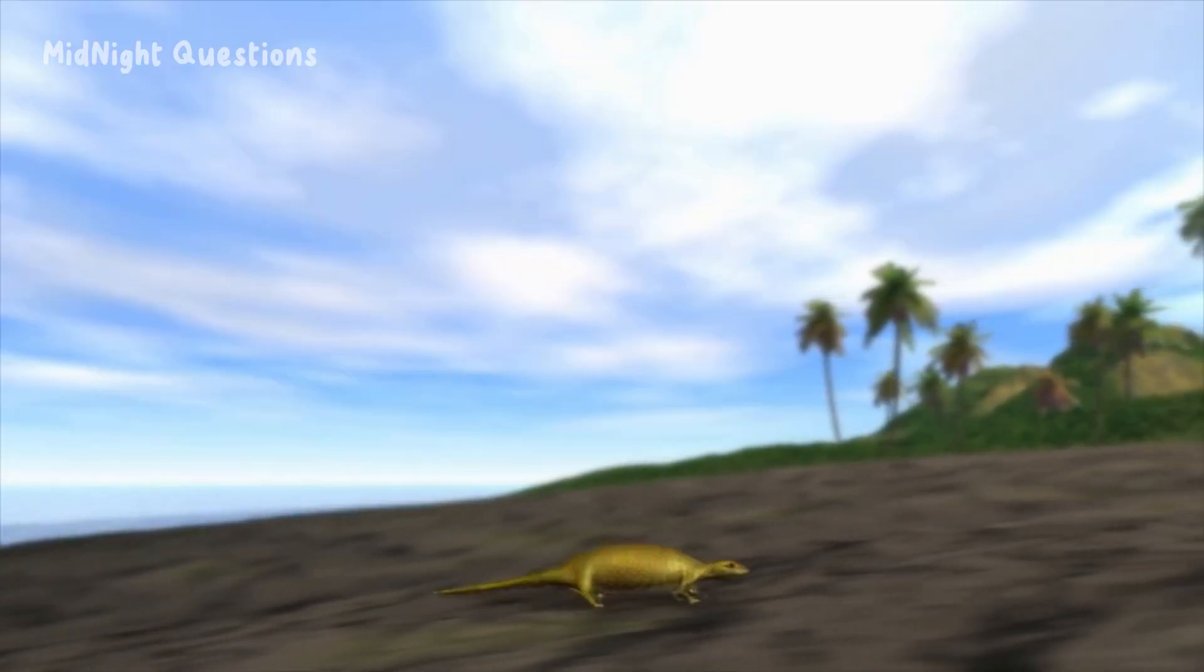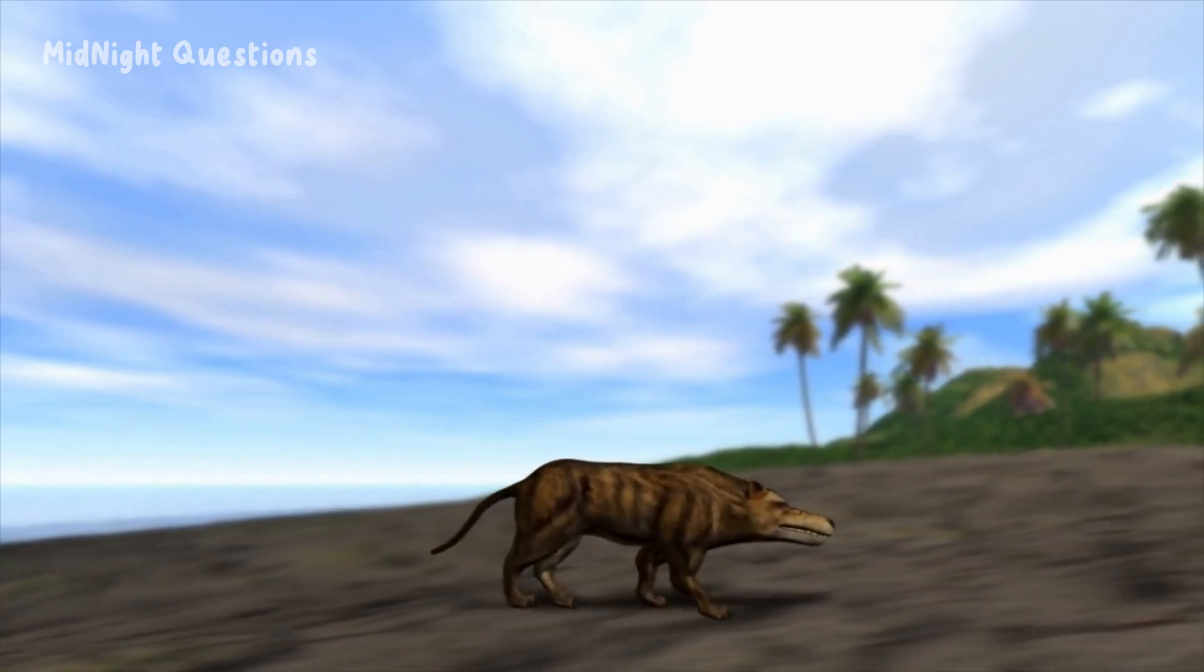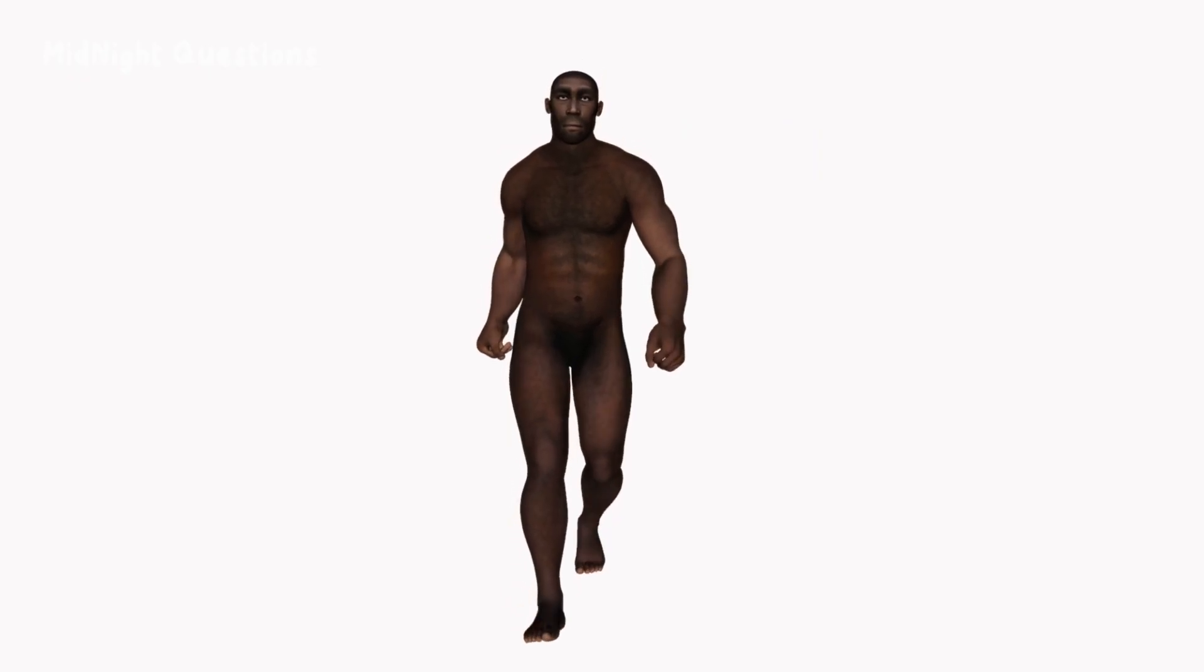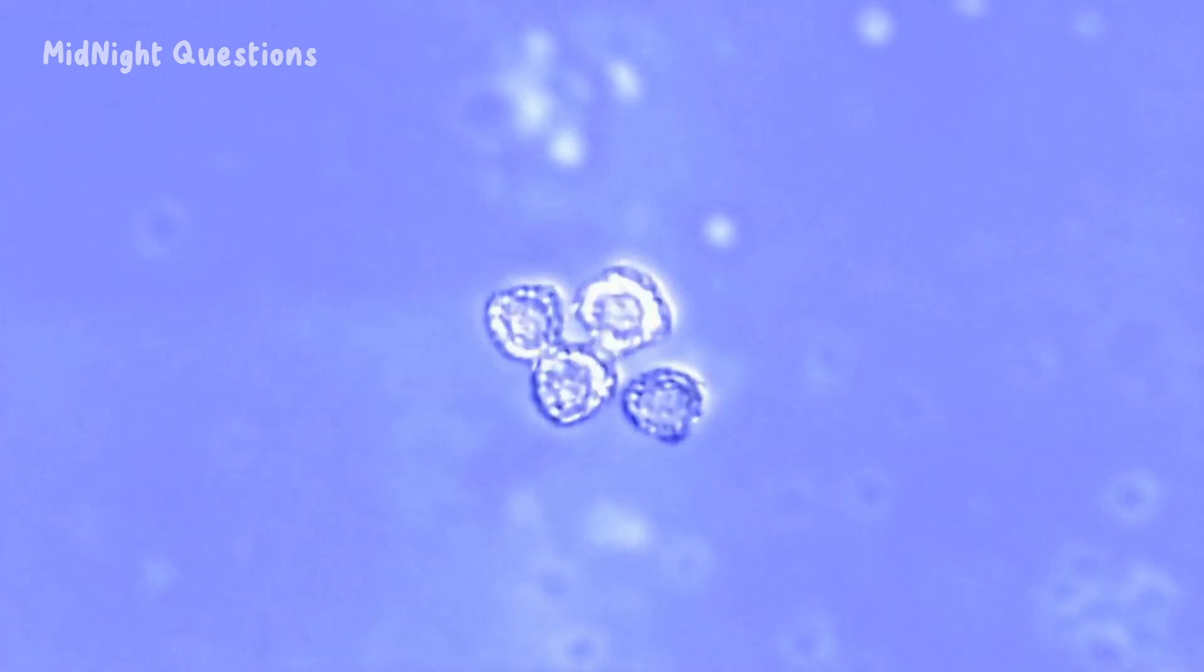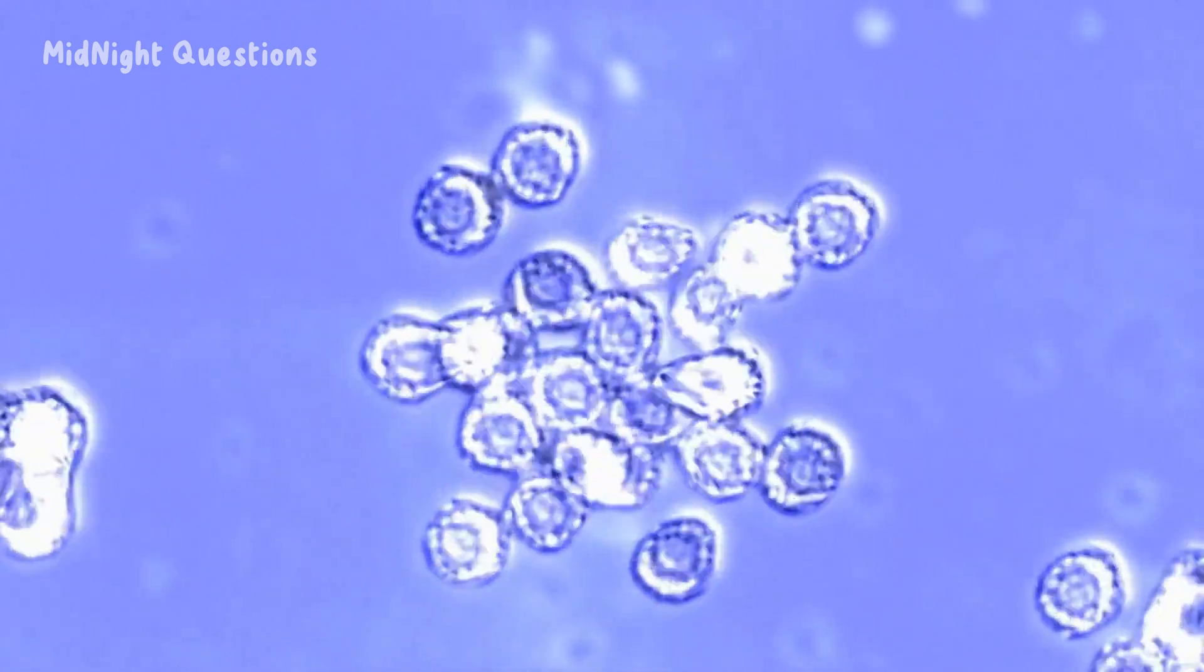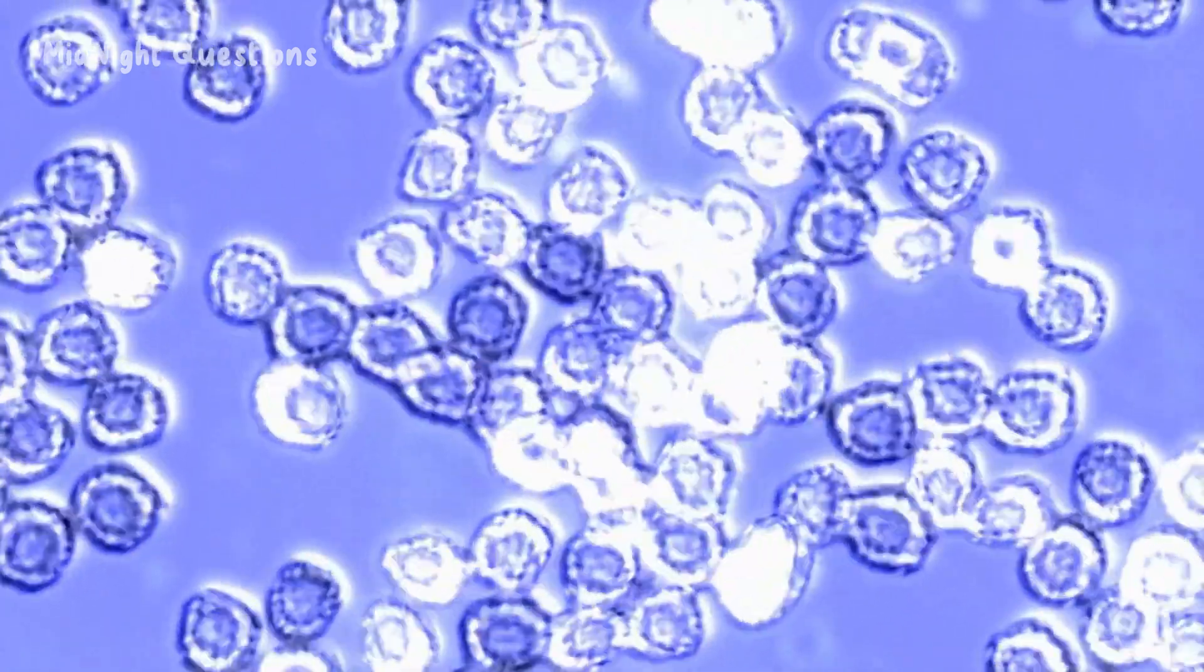During this period, the Earth was still in the early stages of biological evolution. The first multicellular organisms had just started to appear on the planet, and life was still confined to the oceans. These organisms were very simple, consisting of only a few cells and lacked the complexity of the life forms that exist today.